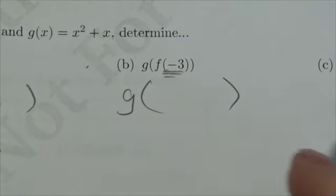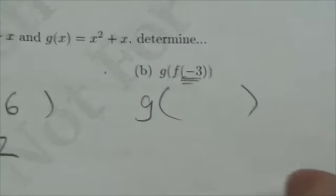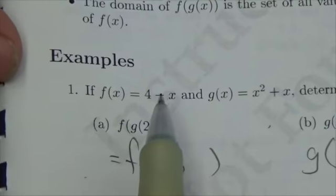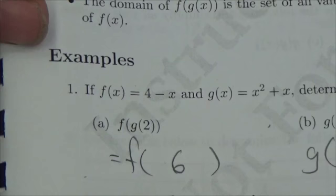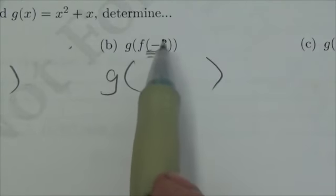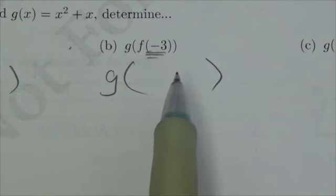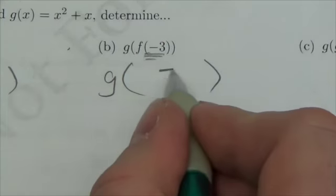I'm not going to do anything with g at this point here. But now if we take a look at the f function here, f is 4 minus the independent variable here, x. So we come over here. Well, that independent variable's negative 3. So 4 minus negative 3 will be 7.